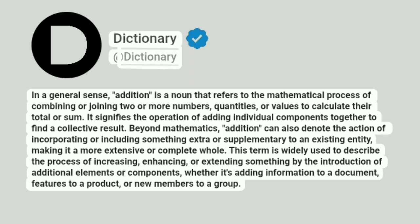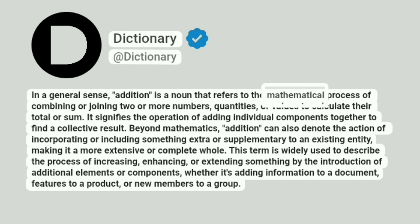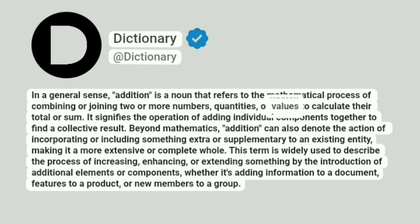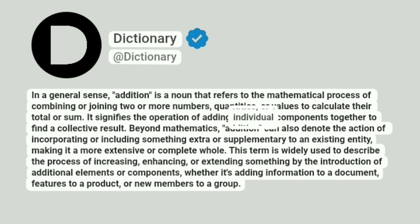Dictionary. Addictionary. In a general sense, addition is a noun that refers to the mathematical process of combining or joining two or more numbers, quantities, or values to calculate their total or sum. It signifies the operation of adding individual components together to find a collective result.